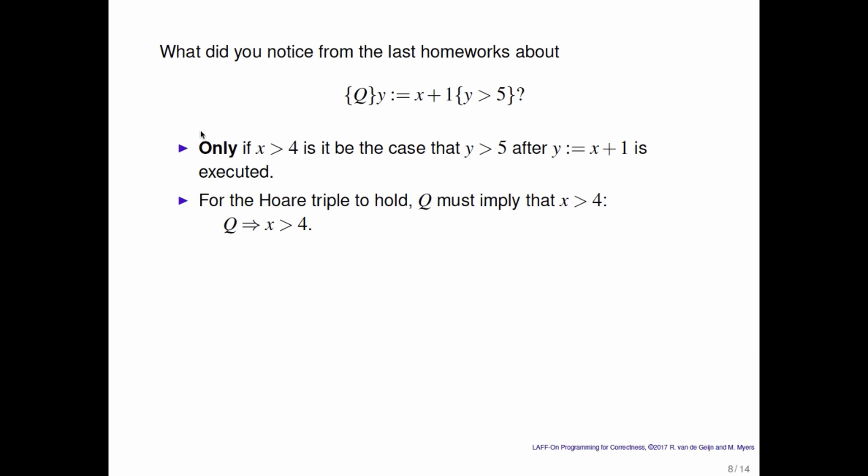For the Hoare triple to hold, Q must imply that x is greater than 4. Otherwise it's not the case that x is greater than 4, and therefore the assignment will not complete in a state where y is greater than 5.